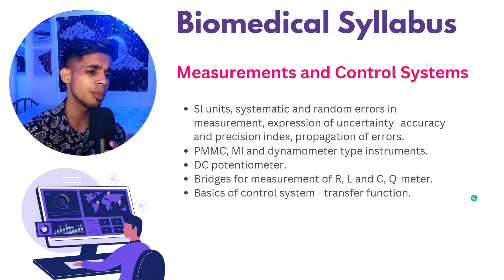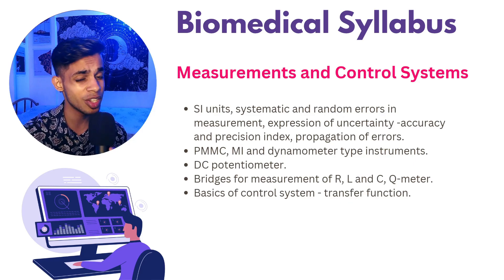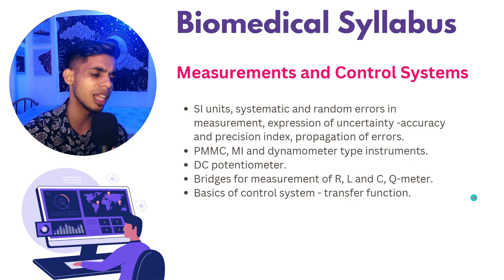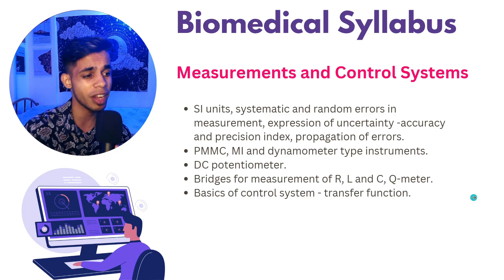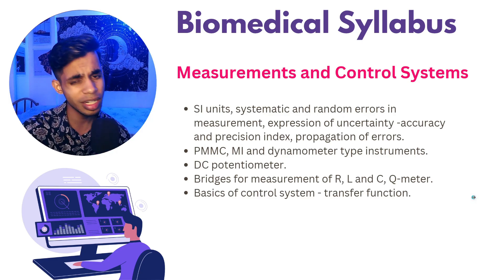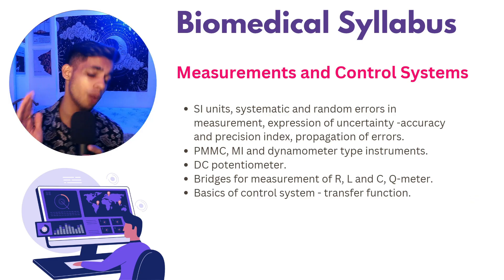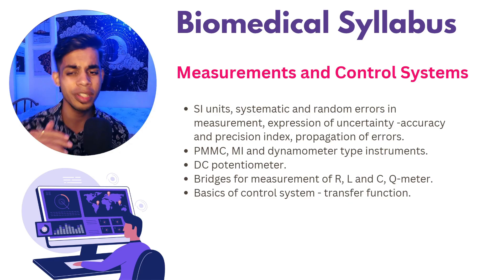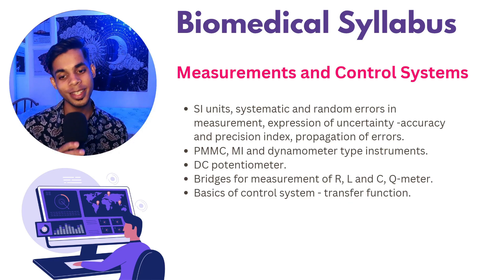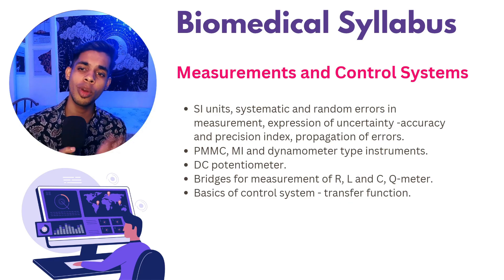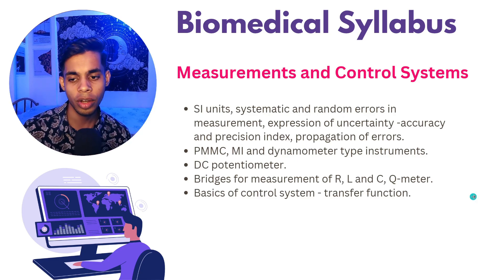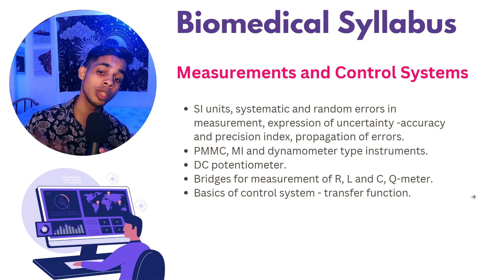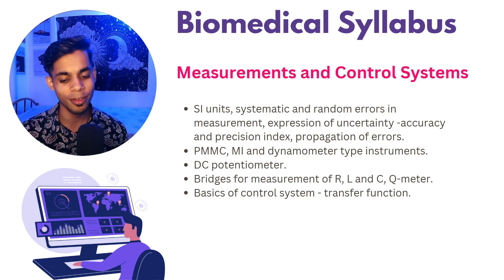Measurement and control systems includes DC potentiometers, SI units, systematic and random errors, bridges for measurement of RLC and Q-meter, and basics of control systems including transfer functions. This section has relatively fewer topics, so it is easier to study. You might consider starting from the back of the syllabus if you want quicker wins in preparation.